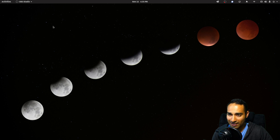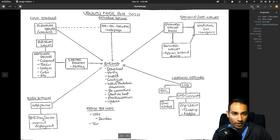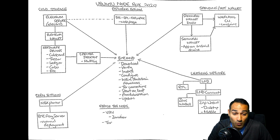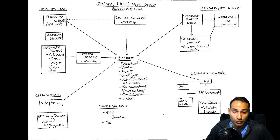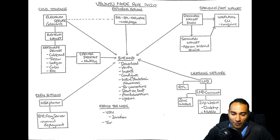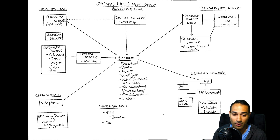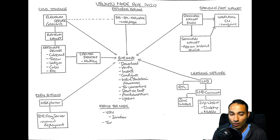By way of overview of what we are going to be installing, I have a diagram here which shows essentially the Ubuntu node box for 2020. These are my top picks of pieces of software for your Bitcoin node — feel free to amend as you see fit. The first thing you'll notice in this diagram is that Bitcoin Core (bitcoind) is where all the arrows point to, so that is a very important piece of software. We'll download, verify, install, configure, and do the initial blockchain download. We'll set it up such that only your peers are connected via Tor, communicating over Tor, which adds a little more privacy.